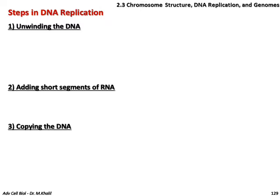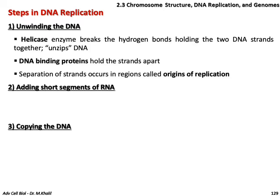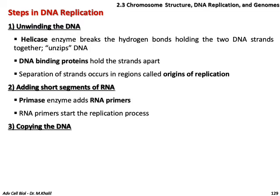The steps of DNA replication are generally three: unwinding of the DNA, adding short segments of RNA, and copying the DNA. In unwinding, helicase enzymes break the hydrogen bonds holding the two DNA strands together, unzipping the DNA. DNA binding proteins hold the strands apart. Separation of strands occurs in regions called origins of replication, and replication starts at these origins. Then primase adds an RNA primer to begin the replication process.